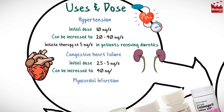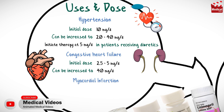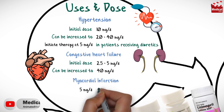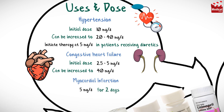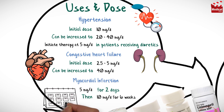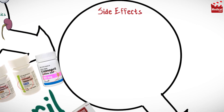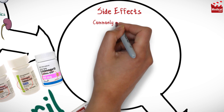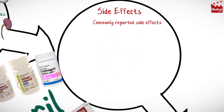For congestive heart failure, the usual initial dose is 2.5 to 5 milligrams per day and can be increased up to 40 milligrams per day. For improved survival after myocardial infarction, the usual dose is 5 milligrams per day for two days, then 10 milligrams per day for six weeks.